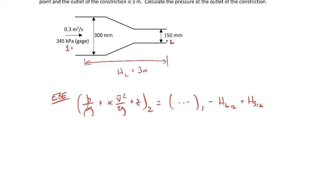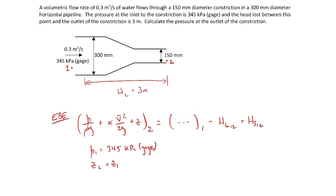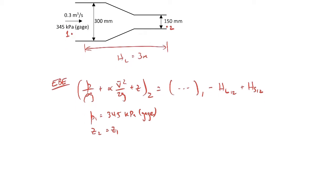Let's write down what we know in this problem. We know p1, that's given, that's the 345 kilopascals gauge. z1 and z2 are going to be equal to one another. We're told that it's horizontal, so they'll have the same elevation. We're told the head loss between those two points is three meters. There's no fluid machinery, so the shaft head term is going to be zero.